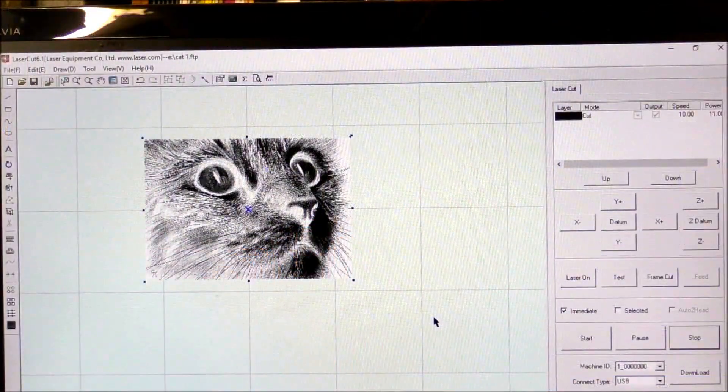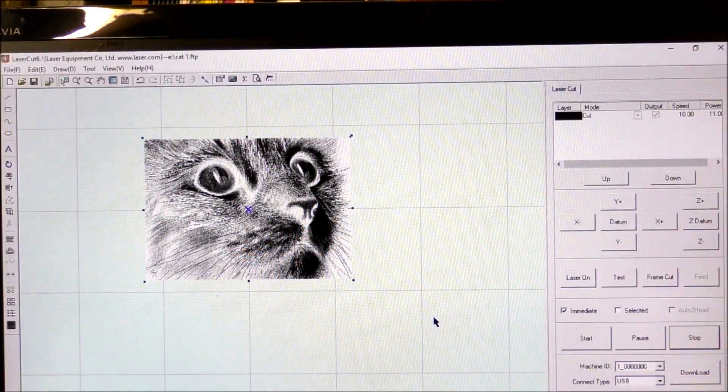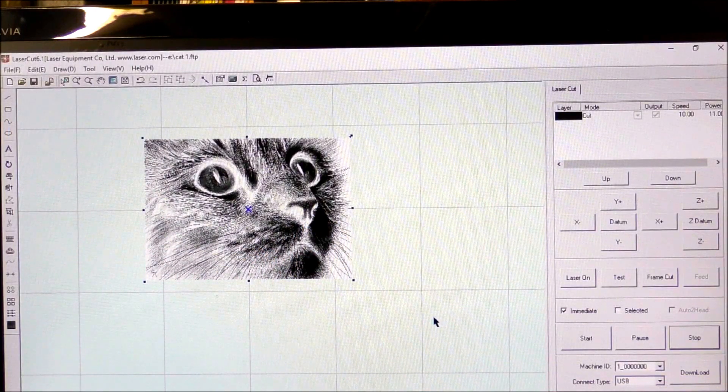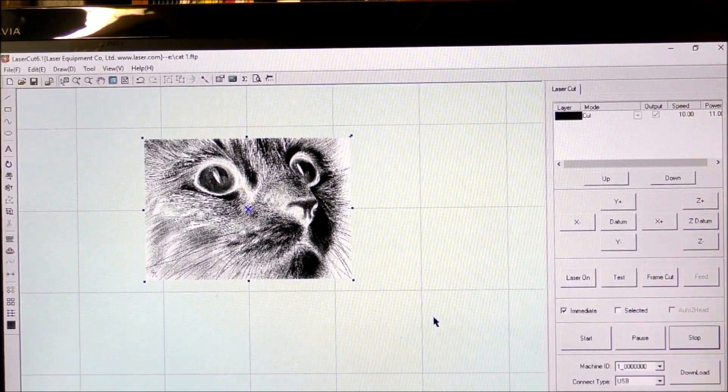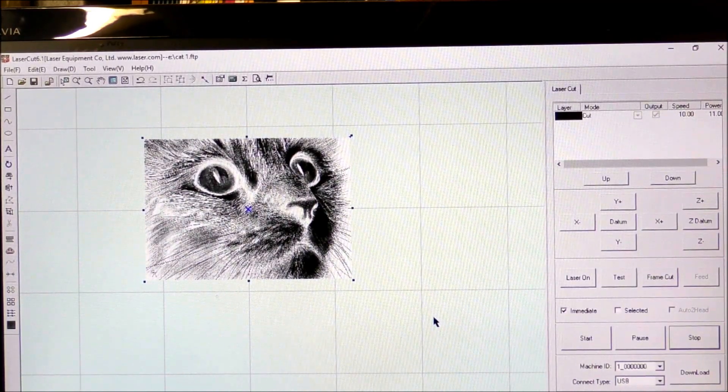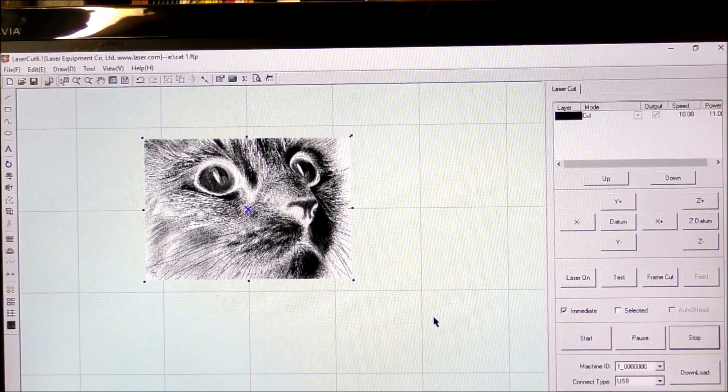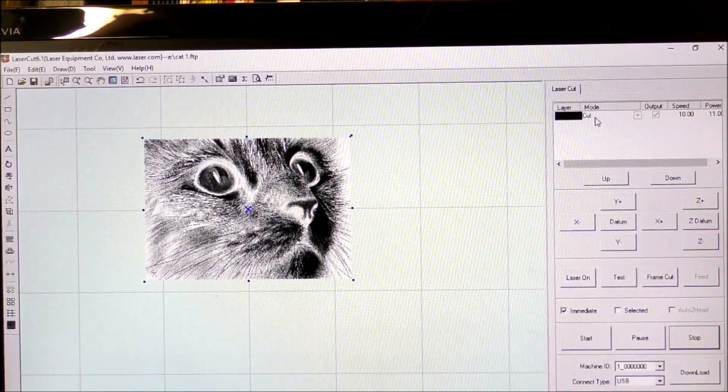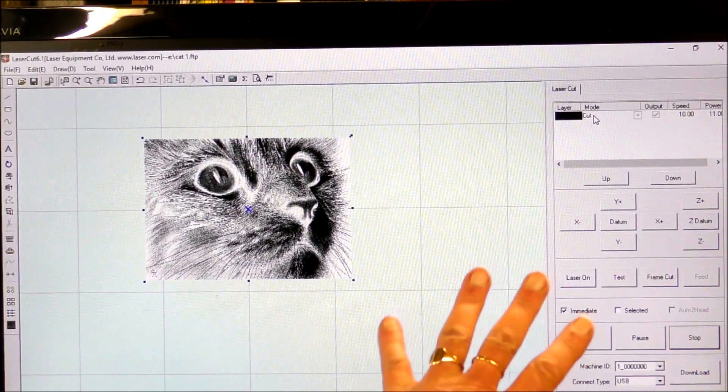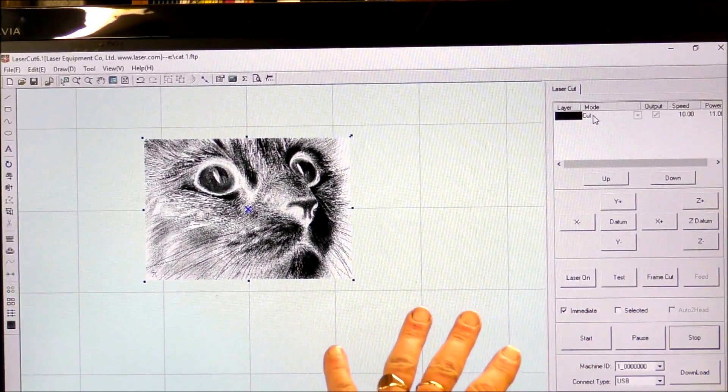Now having converted very quickly our picture to a negative, we can now process it further in LaserCut. Now we don't want to cut it, so we change that. To change that you just hover over it.